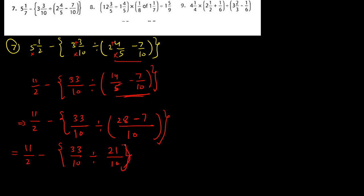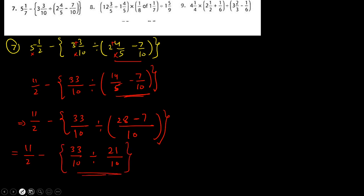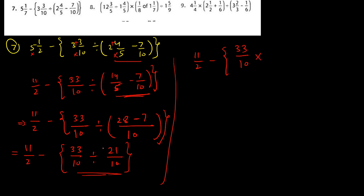The small bracket is now removed; only the curly bracket remains. So we write: eleven upon 2 minus thirty-three upon 10, and we change the division sign into multiply and reciprocate the next fraction. The tens cancel; we can reduce 33 and 21 by 3 — three ones are three, three sevens are twenty-one.